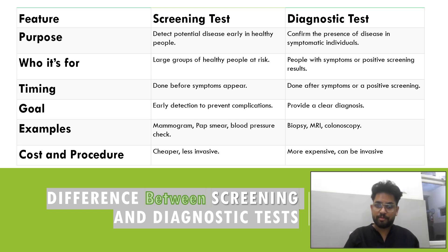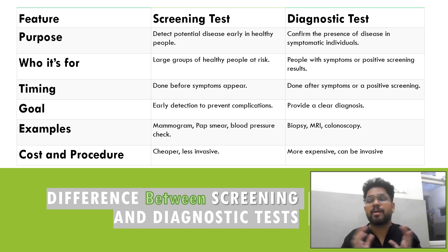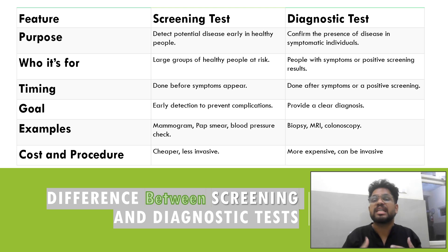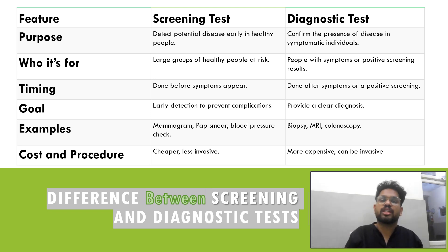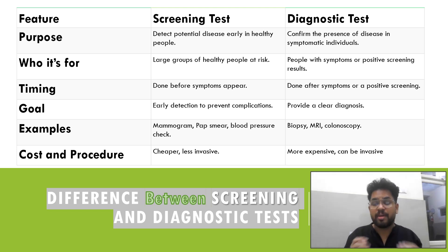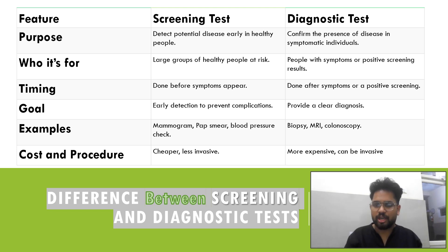Who is it for? A screening test is for a large group of healthy people at risk — for example, people between 30 to 60 years of age who are potentially at risk for cardiovascular diseases. A diagnostic test is for people who already have symptoms and need confirmation of their condition. In terms of timing, a screening test is done before any symptoms appear, while a diagnostic test is done after symptoms appear.